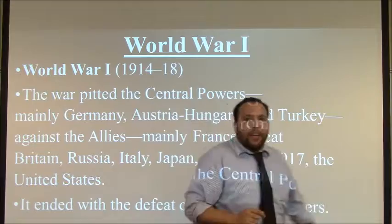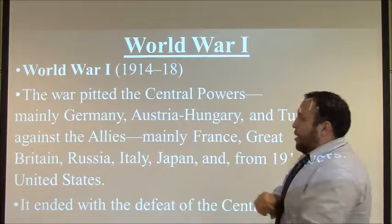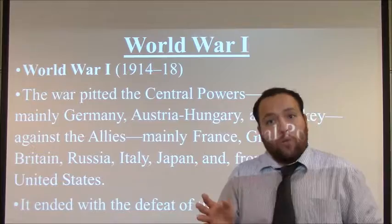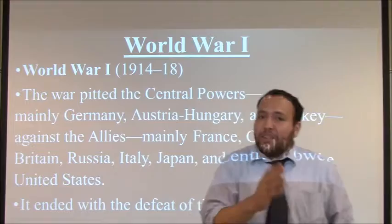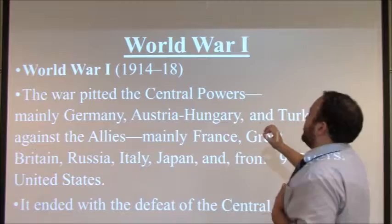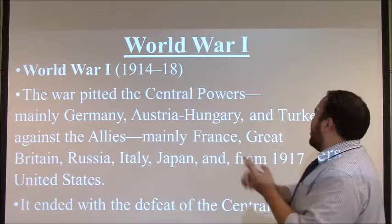World War I, spanning from 1914 to 1918, is going to pit two different powers against each other: the central powers and the allies. Be careful not to confuse terminology between World War I and World War II — in World War II you're going to have the axis and the allies. During World War I, the central powers were mainly Germany, Austria-Hungary, and Turkey.